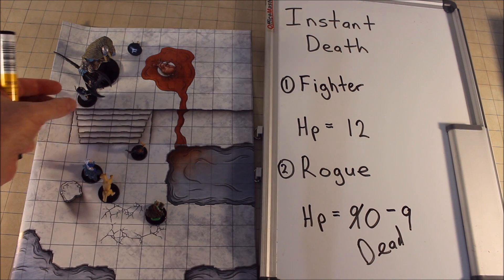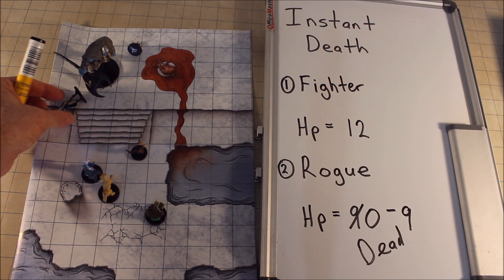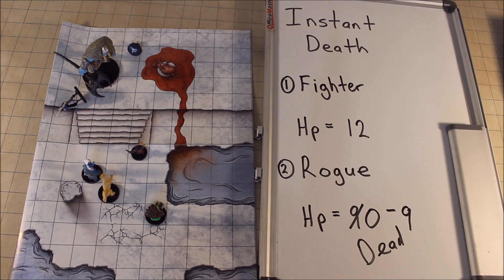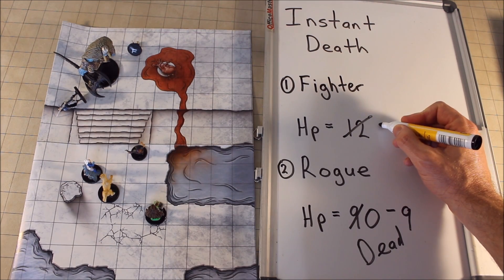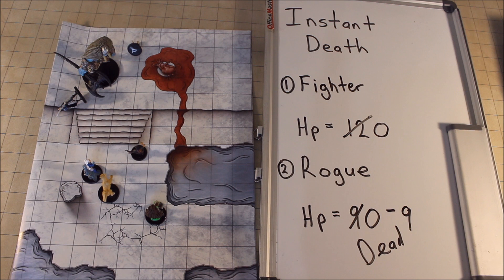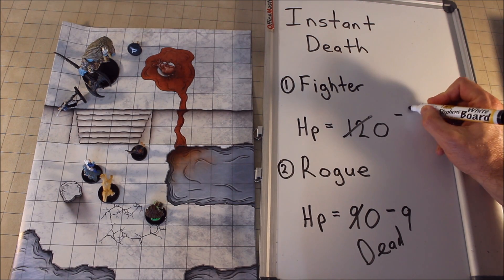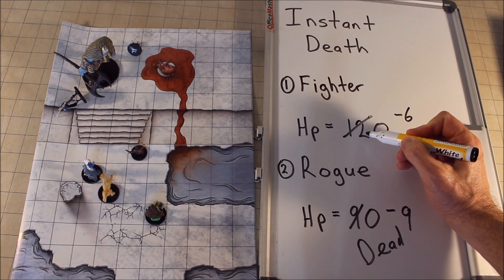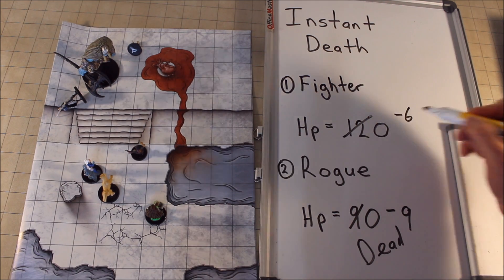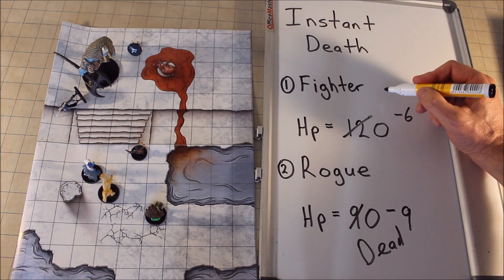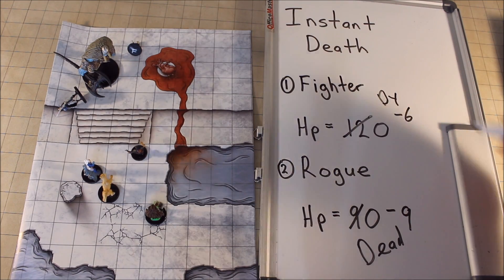Say the next strike hits the fighter and it goes down. Same sort of thing — the frost giant has done 18 points of damage, so you deduct 18 from 12, which means it goes down to zero. There are six points of damage left over, but that six points does not exceed the total maximum hit points of the fighter. Therefore this character is just dying but not instantly killed.